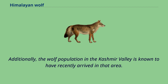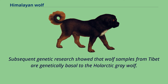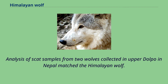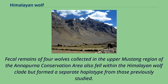Subsequent genetic research showed that wolf samples from Tibet are genetically basal to the whole arctic gray wolf. Its mitochondrial ND4L gene commences with the base pairs GTG, whereas all other canids commence with ATG. Results of whole genome sequencing showed that it is the most genetically divergent wolf. Analysis of scat samples from two wolves collected in Upper Dolpo in Nepal matched the Himalayan wolf. Fecal remains of four wolves collected in the upper Mustang region of the Annapurna Conservation Area also fell within the Himalayan wolf clade but formed a separate haplotype from those previously studied.